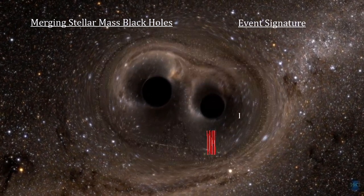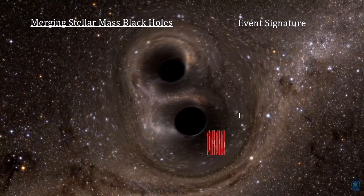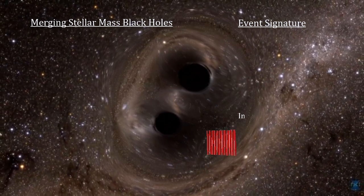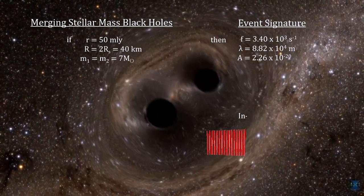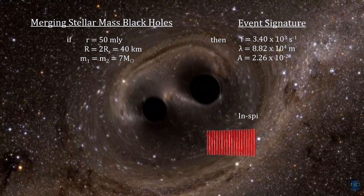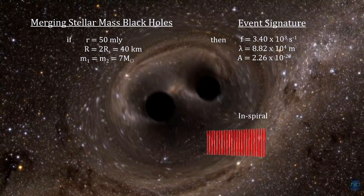Here we see a black hole merger simulation. If each black hole has a mass of seven suns, the Schwarzschild radius is 20 kilometers, twice the radius of the neutron stars.